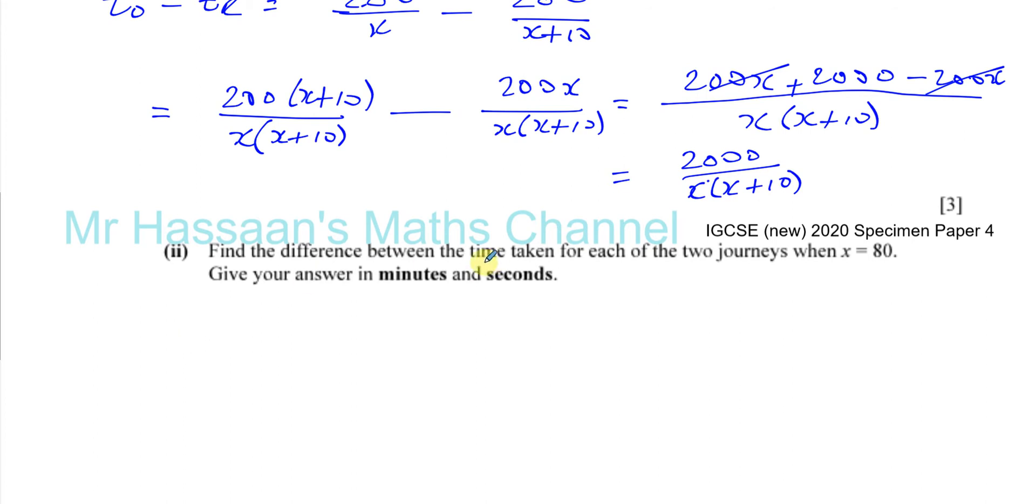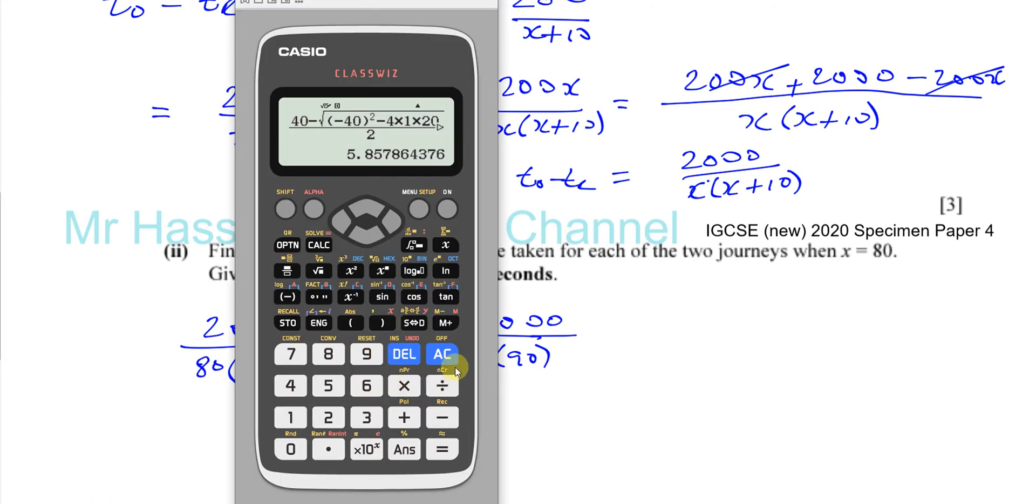So basically, the difference between the time taken for each of the two journeys is what we've got here. This was time outward minus time returning. That expression is the difference between the time taken. So we're going to have to do 2,000 divided by, instead of x, we're going to write 80. So that's going to be 80 times 90. So you have 2,000 divided by 80 times 90, which is 7,200. So it's going to be 2,000 over 7,200, which is going to give you 5 over 18.